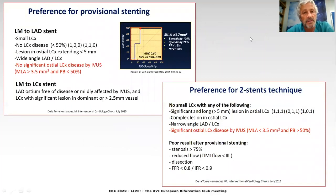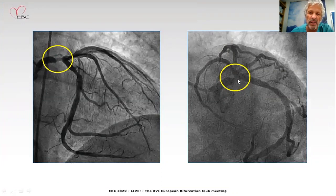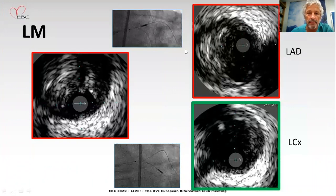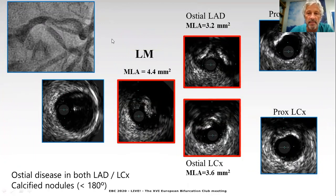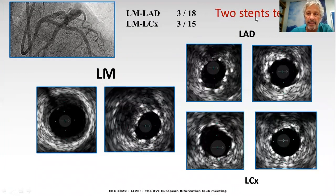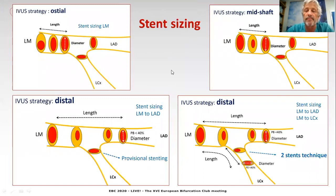Regarding the selection of the strategy — provisional or two stents — there are criteria derived from IVUS that may help in this decision, as we can see in these slides, watching what's going on in the circumflex. For example, in this distal left main lesion with a very difficult evaluation by angiography, IVUS shows involvement of LAD and not much of circumflex. So the selected strategy was provisional with POT. On the opposite side, we have this complex bifurcational lesion where IVUS showed a large plaque with calcification in the distal left main and ostium of both vessels, LAD and circumflex. In this case, a two-stent technique was implemented with good results.